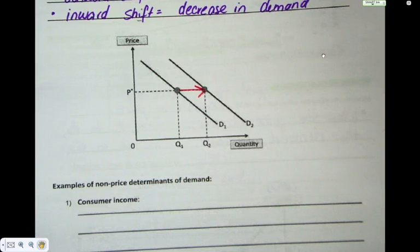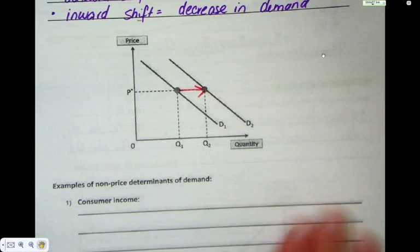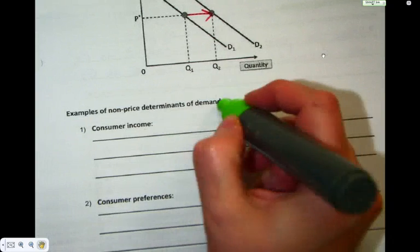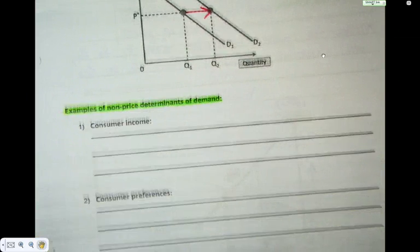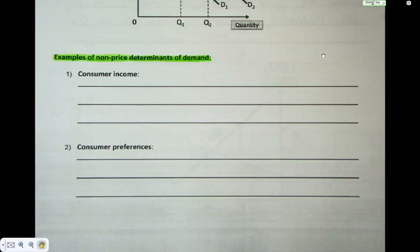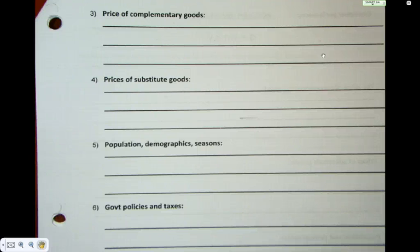Well, what kind of other reason? Well, I'm glad you asked. There are six of them. Examples of non-price determinants of demand. So they are consumer income, consumer preference, prices of complementary goods, prices of substitute goods, population demographic seasons, government policies and taxes.